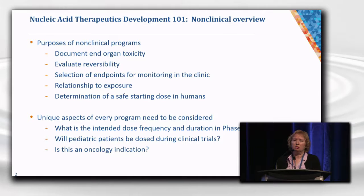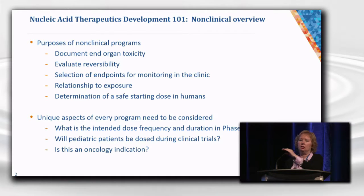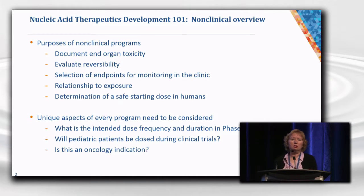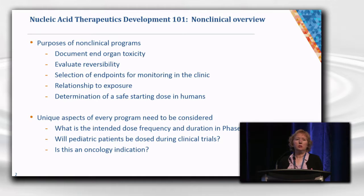So the first question is: why do we do non-clinical studies? There are multiple reasons, including identification of end-organ toxicity, evaluating reversibility of changes that are seen, selection of endpoints that need to be evaluated in the clinic, relationship of these findings to exposure, and ultimately determining a safe starting clinical dose. I'm going to focus primarily on the early development phase — the programs needed to support entry into phase one.